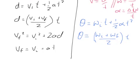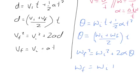Then we've also got omega f squared equals omega i squared plus 2 alpha theta. It looks weird, but it's right. Omega f equals omega i plus alpha t. There we go.